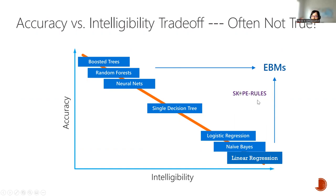In today's meetup we'll focus on two models: first, scope rules — a rule list-based model — and second, the explainable boosting machine. Feel free to interrupt or throw your questions in the chat. I hope this is interactive, like a conversation.